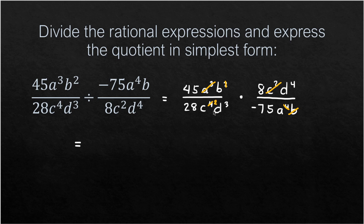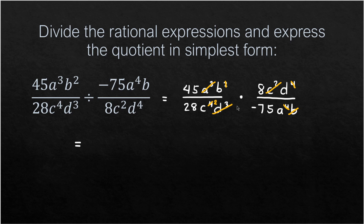For D, we have D³ and D⁴ — D³ cancels, leaving simply D in the numerator. Now let us look at the coefficients: 45, 28, 8, and 75. The common factor of 8 and 28 is 4: 8 divided by 4 is 2, and 28 divided by 4 is 7.